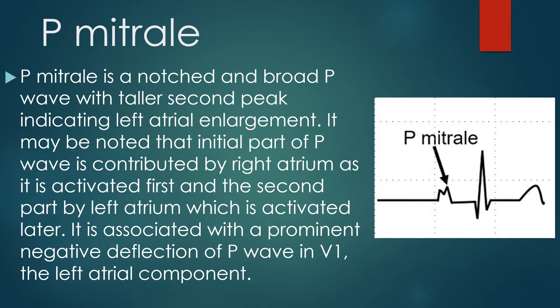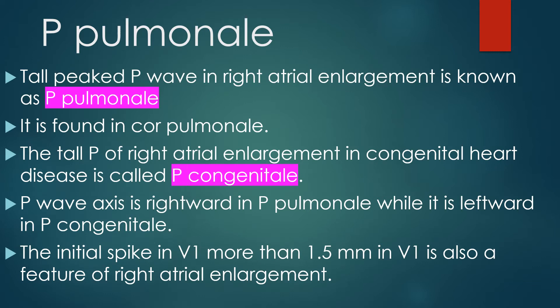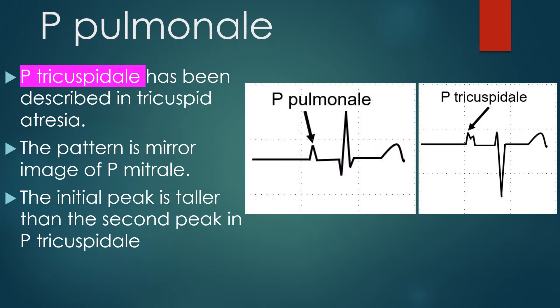The initial part of the P wave is contributed by the right atrium, which is activated first, and the second part by the left atrium. P mitrale is associated with a prominent negative deflection of the P wave in V1. Tall peaked P wave in right atrial enlargement is known as P pulmonale, found in cor pulmonale. The tall P of right atrial enlargement in congenital heart disease is called P congenitale. P wave axis is rightward in P pulmonale and leftward in P congenitale. An initial spike in V1 greater than 1.5 mm is also a feature of right atrial enlargement. P tricuspidale, described in tricuspid atresia, is a mirror image of P mitrale, with the initial peak taller than the second.